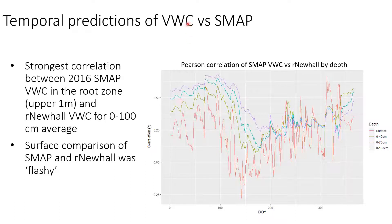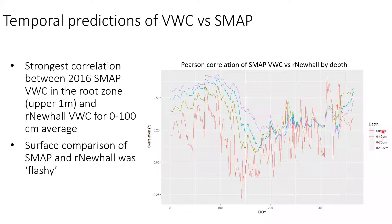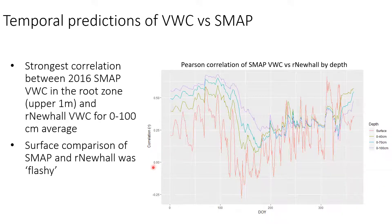We also looked at temporal predictions of volumetric water content from our Newhall compared to SMAP in the same watershed for the same year, with 366 days representing different comparisons of correlation for root zone data from SMAP and different slices of the soil profile: 0 to 100 centimeters, 0 to 70, 0 to 40, and then the surface shown in red. The 0 to 1 meter comparison has the strongest correlation between our Newhall and the SMAP data. As we shave off the lower parts of the profile, our correlation becomes weaker, until our surface comparison to the root zone product is flashier and has much lower correlation coefficients. This is valuable for figuring out where the limitations are in making this a daily model.